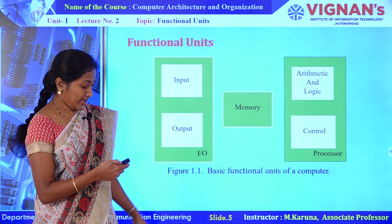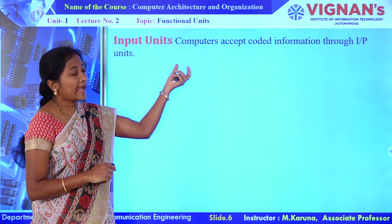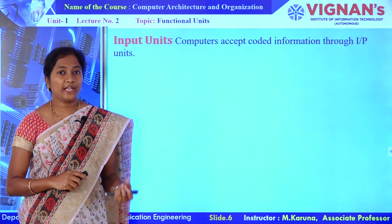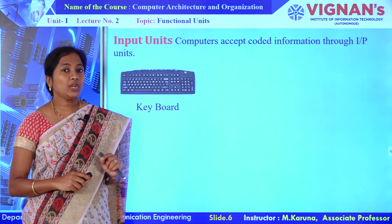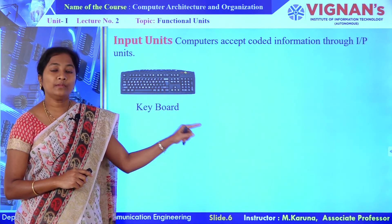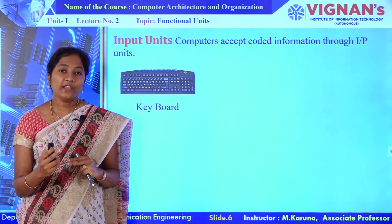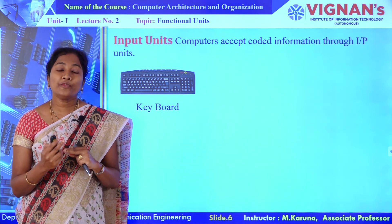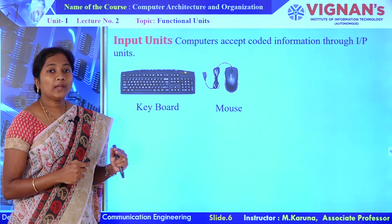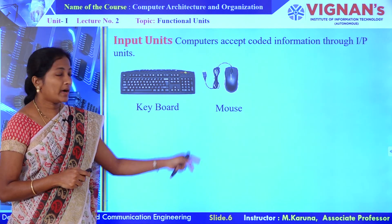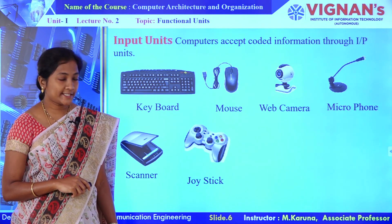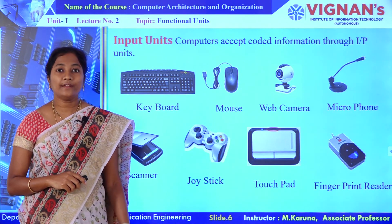Coming to the input unit: the input unit accepts information from a human operator or other computers. For example, a most powerful input device is the keyboard. Whenever you press a key, the corresponding character or digit will be translated into binary code. That will be stored in memory for future reference or that information is directly accessed by the processor for performing operations on that information. Likewise, many input devices are there: mouse, web camera, microphone, scanner, joystick, touchpad, and fingerprint reader, etc.